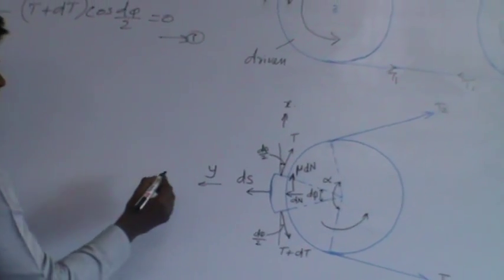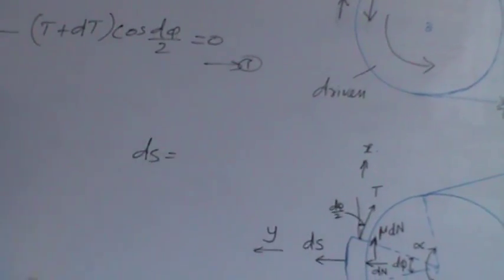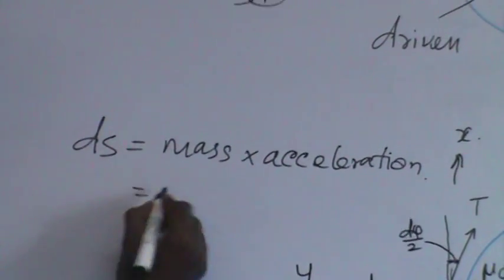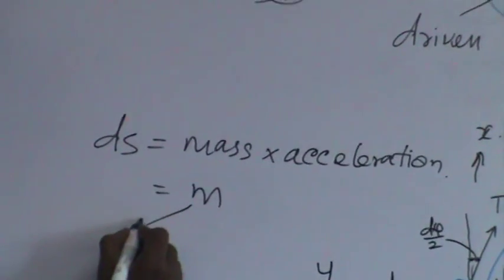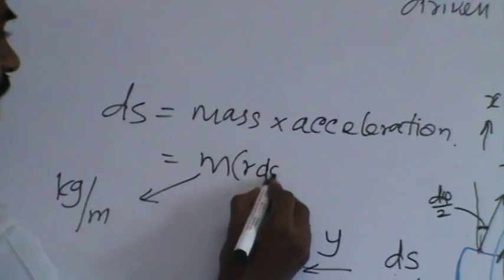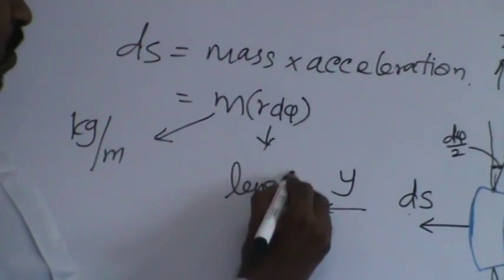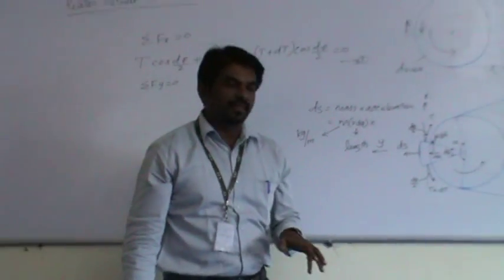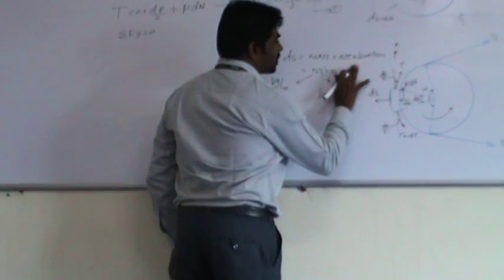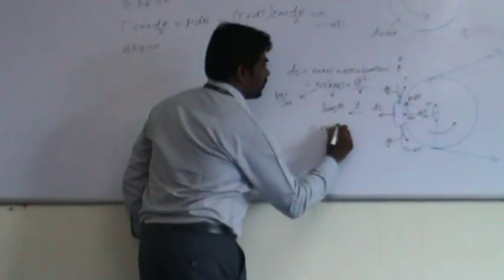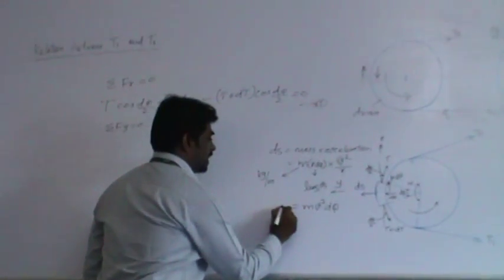Now, fx is equal to 0. So, this force T cos dφ by 2. T cos dφ by 2. And mu dn minus t plus dt cos dφ by 2 equal to 0. The second equation. fy equal to 0. So, we have ds, dn and the vertical components of these two forces. Let us discuss this ds. What is this ds? ds is the centrifugal force. It is nothing but mass into acceleration.